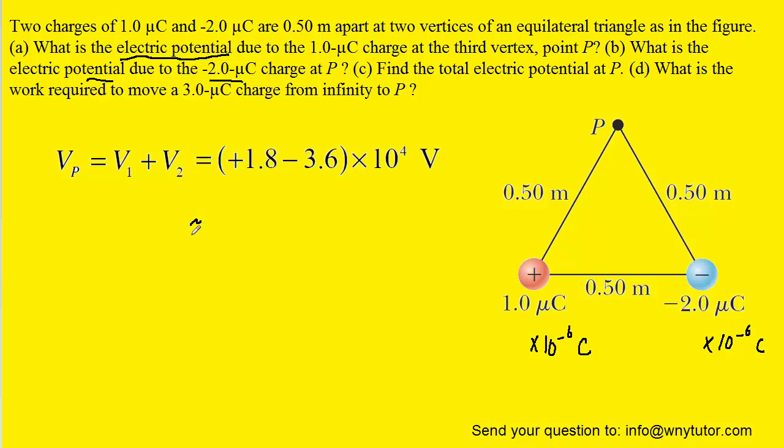And when we add those together, we get a total potential of approximately negative 1.8 times 10 to the positive 4th volts. So that's the correct answer to part C.